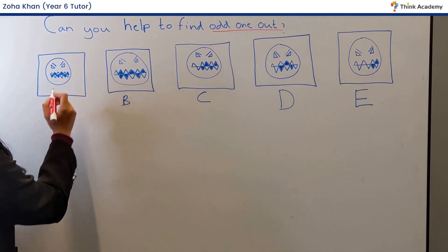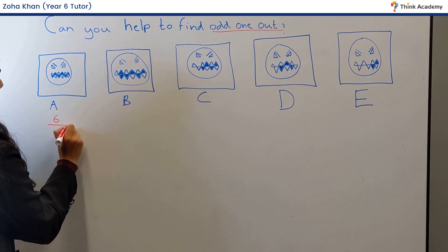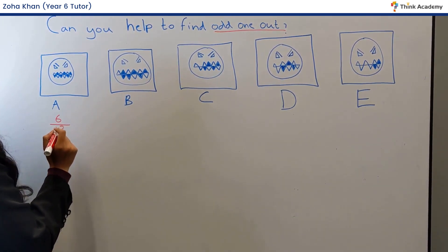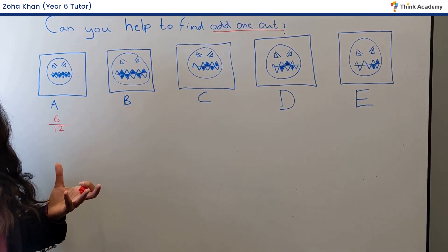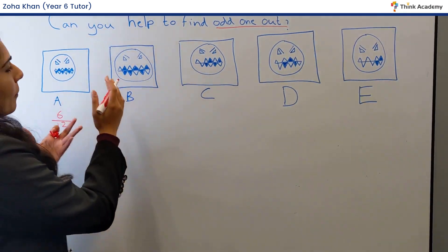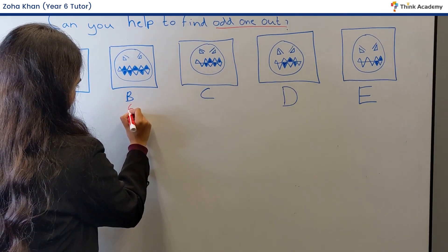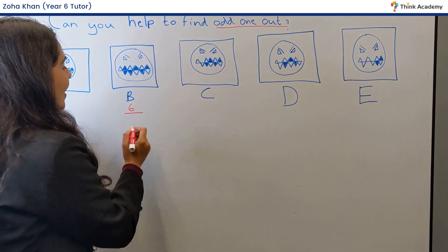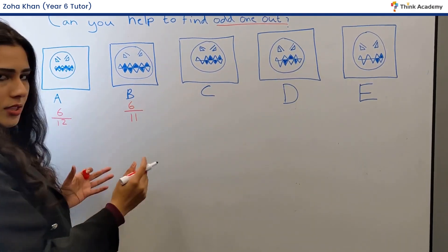So for A, we know that we have six shaded parts and we've got 12 parts all together. So the fraction for the shaded over the unshaded would be six over 12. For B, we've got six shaded parts and we've got 11 unshaded parts.